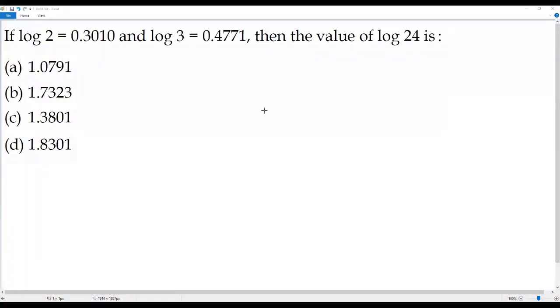Here we have a pre-calculus problem. Let's go over the question. If log 2 equals 0.3010 and log 3 equals 0.4771, then the value of log 24 is.